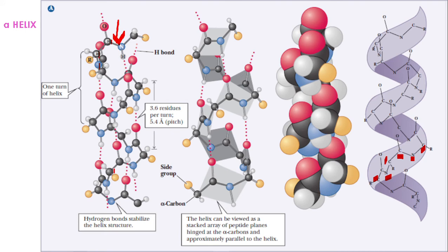This is what is called the alpha helix. One turn of the helix — the helix is something like a spring. One turn means this much distance. Starting from an alpha carbon, it comes here like this — bending and folding — that is one turn. Then it moves again for the next turn. This coiled structure is stabilized by hydrogen bonds.